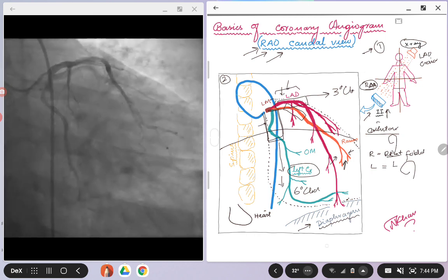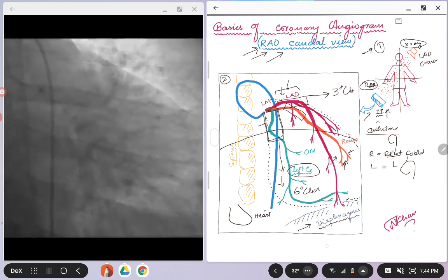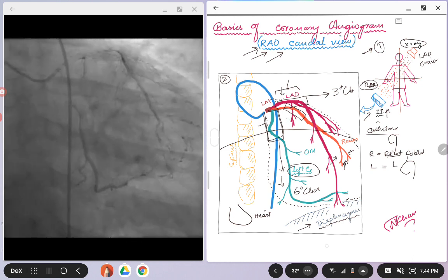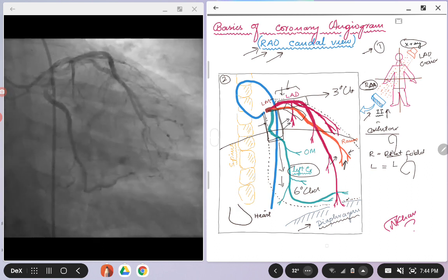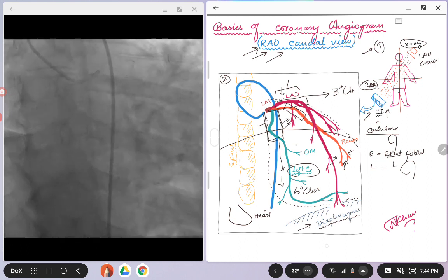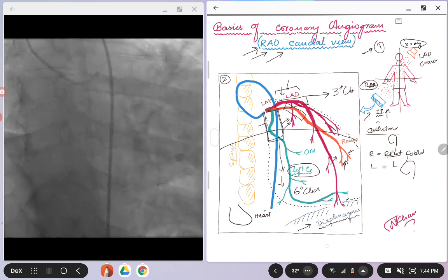The proximal portion of the LAD, as we talked about, will be laid down very nicely, laid out very nicely. Although you might not be able to see the bifurcation like the diagonal branches coming off of it, you might see the septal perforator. As in this case, you can see a big septal perforator coming down that kind of tells you this is a left anterior descending artery.